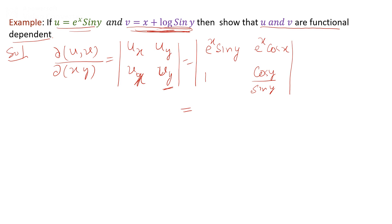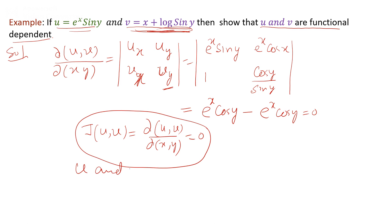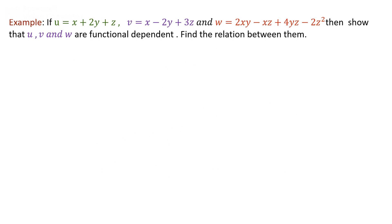Solving the determinant, we get e^x cos y minus e^x cos y, which equals zero. So the Jacobian of (u, v) with respect to (x, y), that is ∂(u,v)/∂(x,y), equals zero. Therefore, u and v are functionally dependent — these two functions depend on each other.